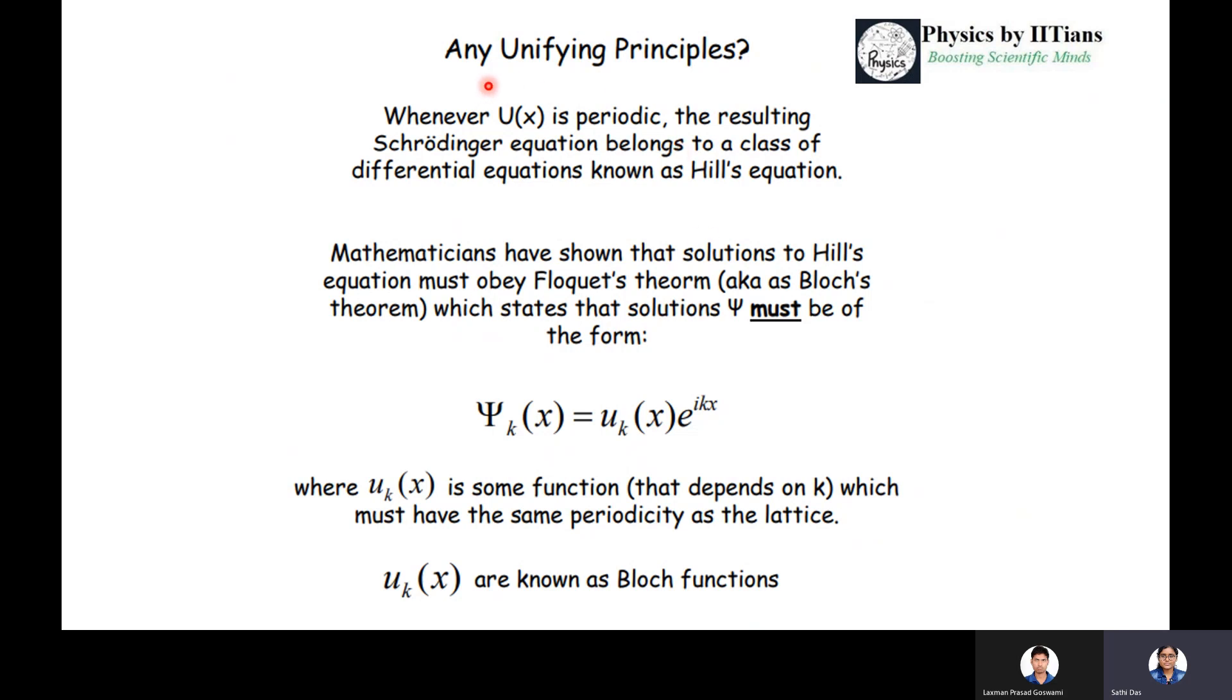First of all, before understanding the Kronig-Penney principle, we should know about any unifying principle for any kind of periodic potential. Suppose u(x) is periodic. What will be the effect of the potential on a wave function when the potential is periodic? The resultant Schrödinger equation belongs to a class of differential equation, also known as Hill's equation. Mathematicians have already shown that the solution to Hill's equation will obey Bloch's theorem.